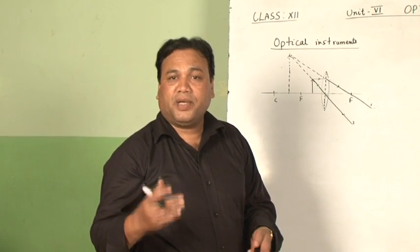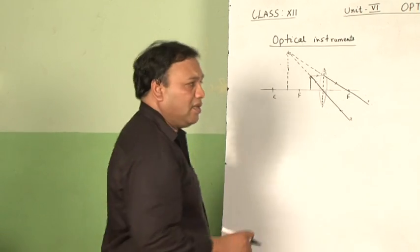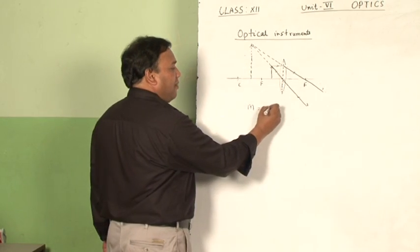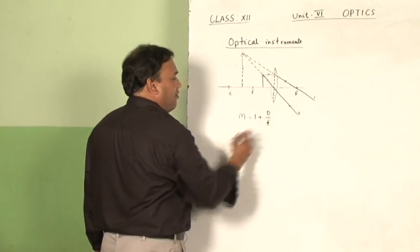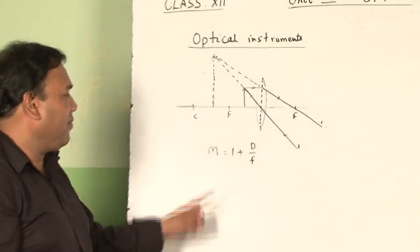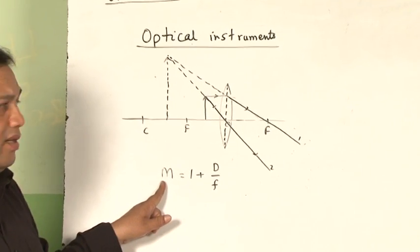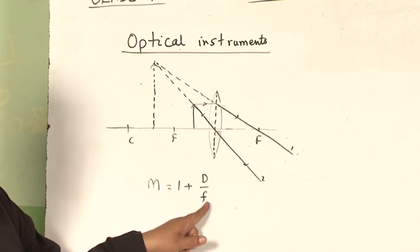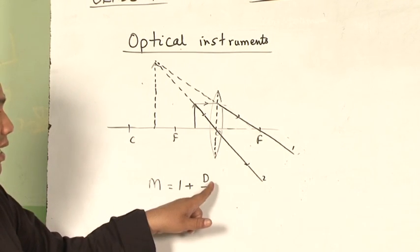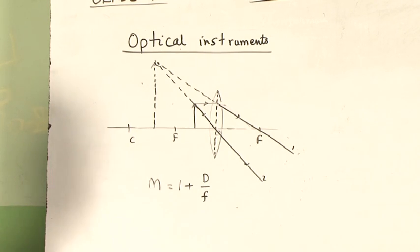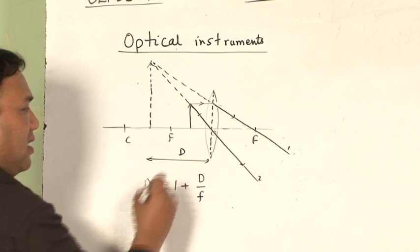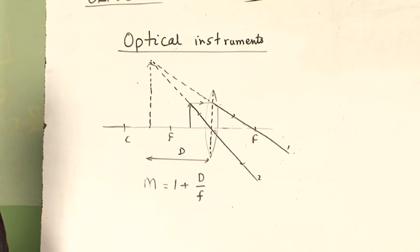This virtual image is bigger than the object. Hence, when the object is placed between the optic center and the focus of the convex lens, it forms an enlarged and erect virtual image towards the same side. This simple arrangement is called a simple microscope. The magnifying power is written as M equals 1 plus D/f, where D is the least distance of distinct vision — 25 centimeters for a healthy human eye — and f is the focal length of the lens.